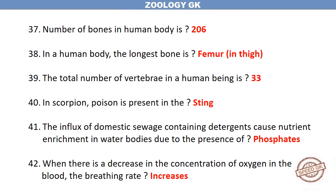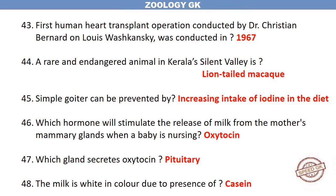In scorpion, poison is present in the sting. The influx of domestic sewage containing detergents causes nutrient enrichment in water bodies due to the presence of phosphates. When there is a decrease in the concentration of oxygen in the blood, the breathing rate increases.